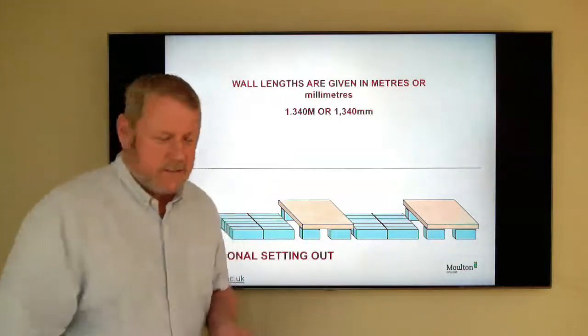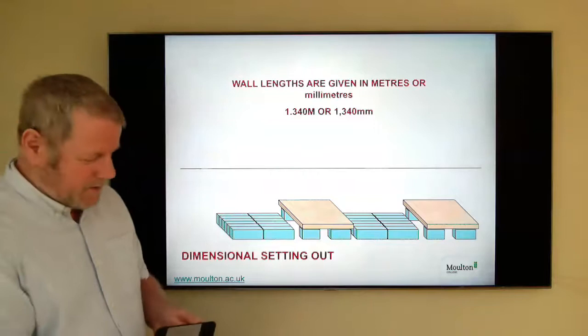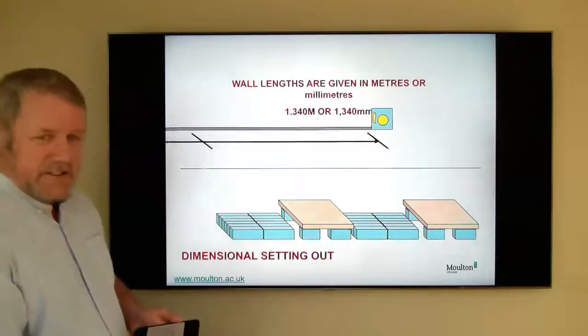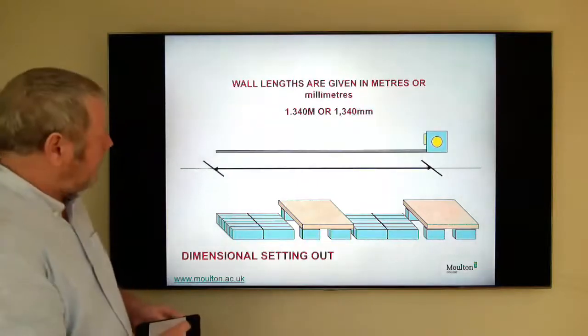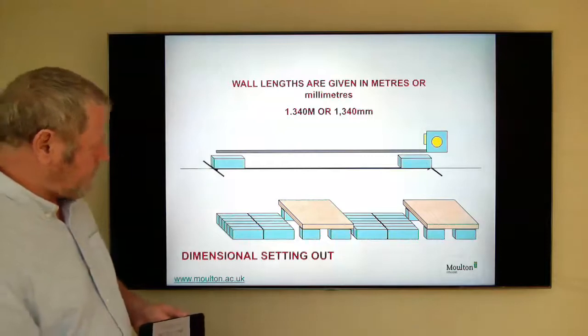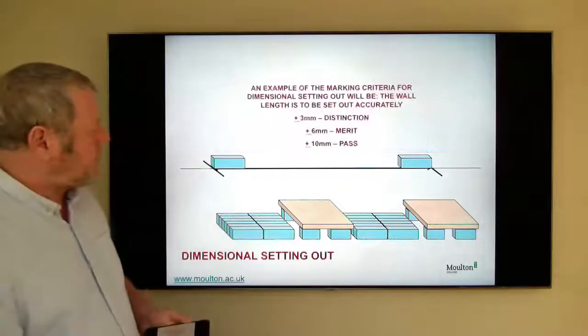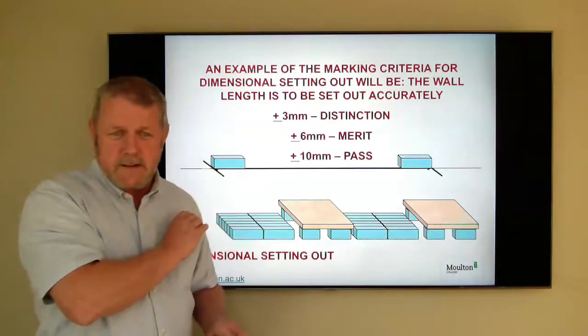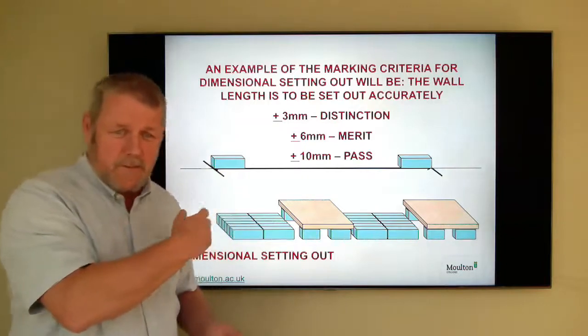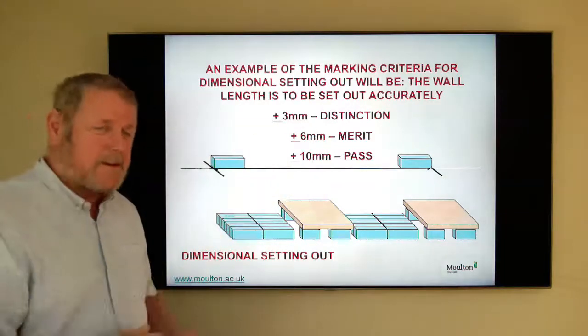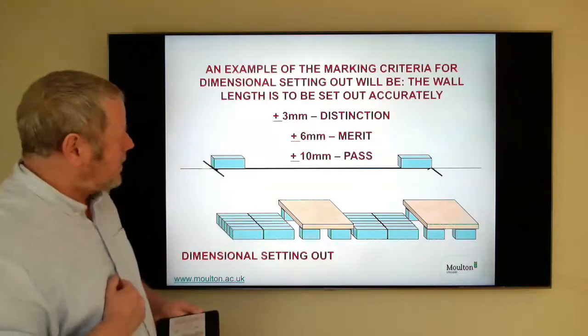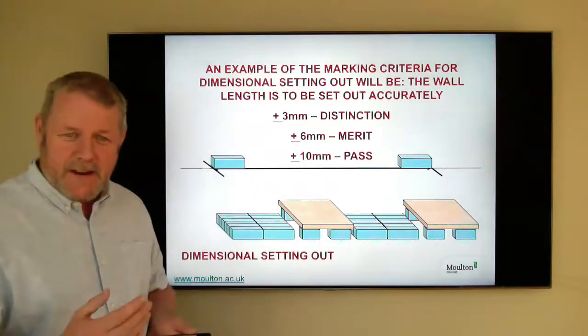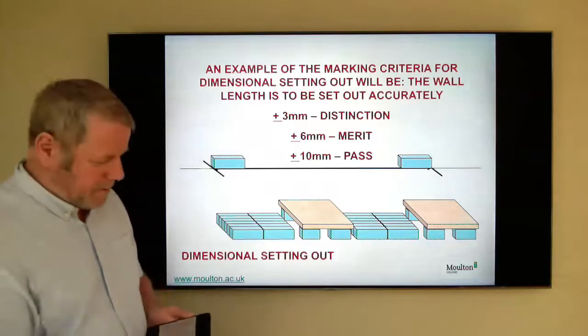So when we're looking to set out work, and there is again, measurements that we would look to, for you to achieve. If you want to achieve a distinction, all of your work will be set out to within three millimetres. So there's three millimetres of error. So if the wall is going to be 1.9 metres long, you've got three millimetres tolerance, plus or minus. With six millimetres of merit, 10 millimetres of pass, anything less than that, I'm afraid will be a referral and you'll be setting it out and building again.